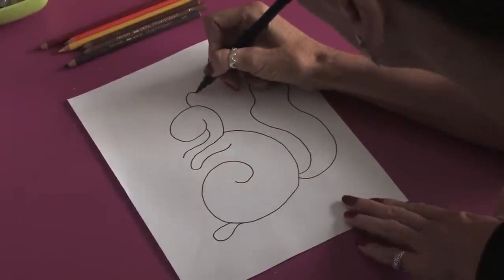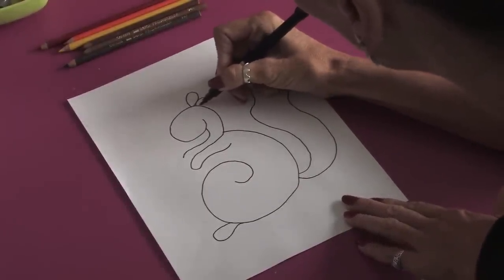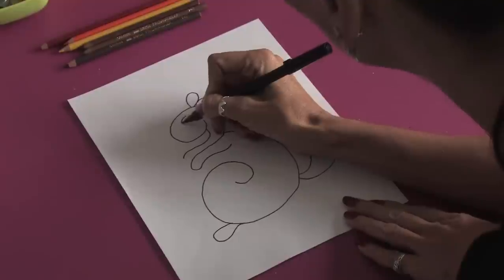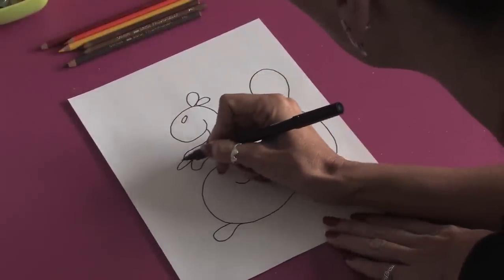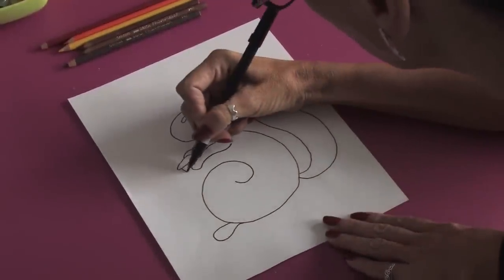And then just two more simple shapes to form the ears, a little oval for the eye, and we can put a little nut in his hand, just like a little acorn.